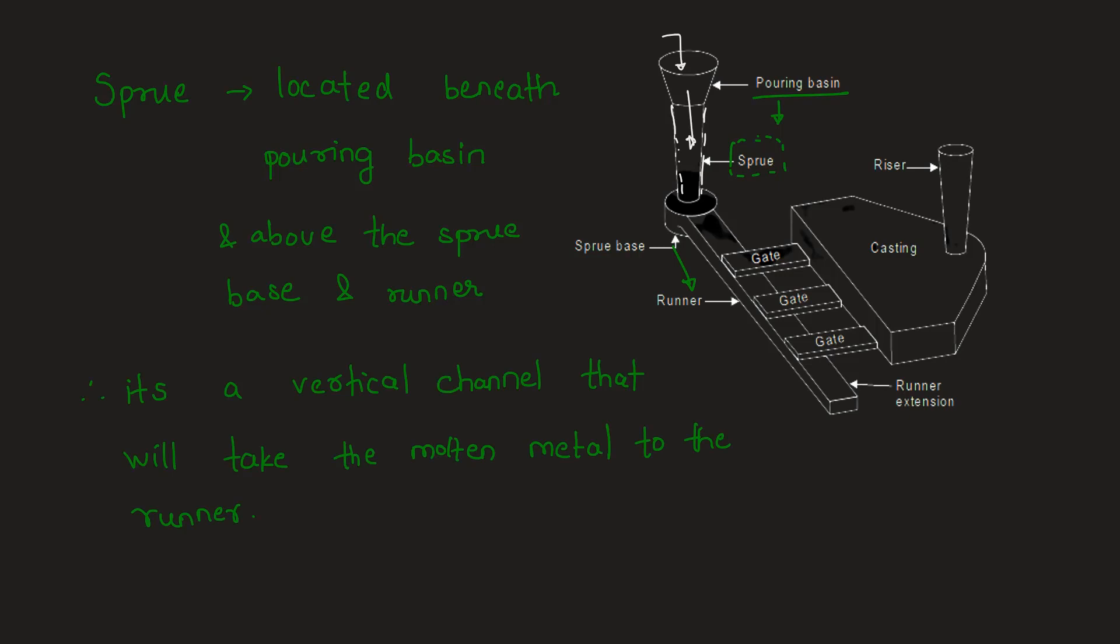The runner then acts as a horizontal channel, taking the molten metal towards the gates. From the gates, it goes to the casting and to the riser, and thereby the casting is performed. So we can mark the option which has sprue in it.